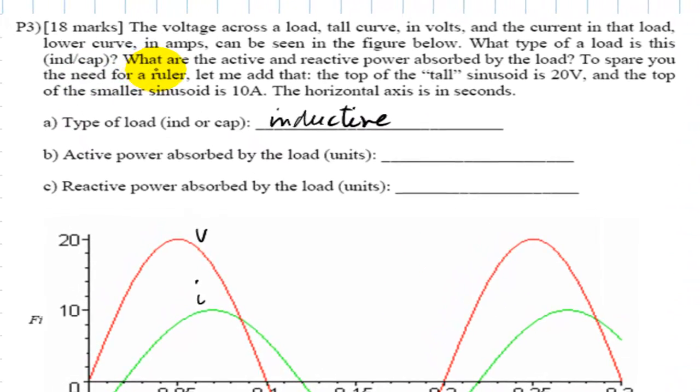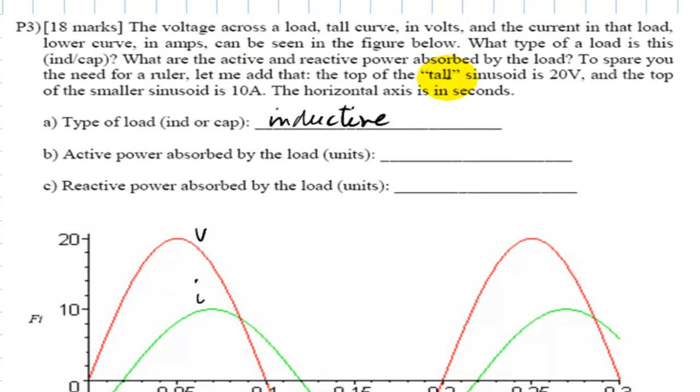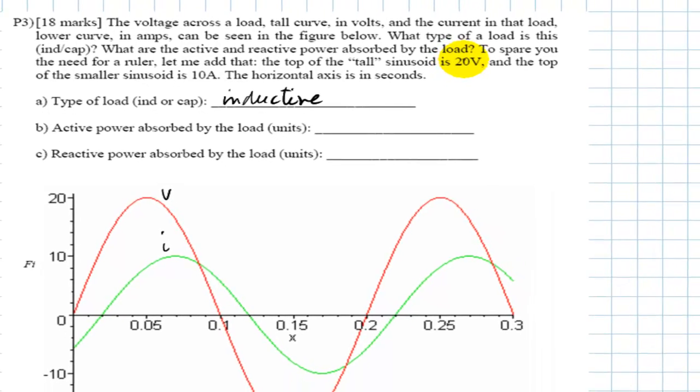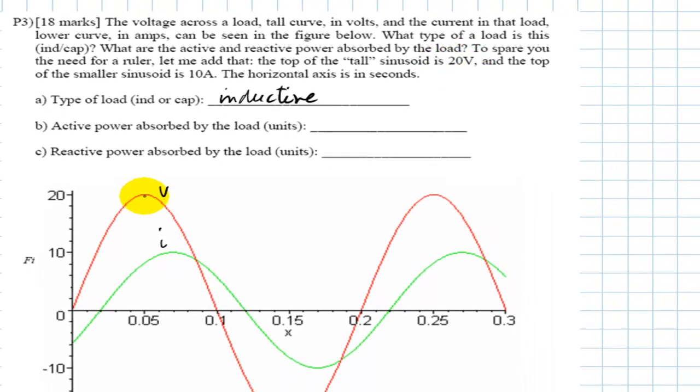It says then, what are the active power and the reactive power absorbed by the load? We are given the peak value of the voltage, so we have the phasor of the voltage. The voltage as a phasor has peak value. These are RMS phasors or IEEE phasors. So RMS value with zero degrees. That is the voltage.